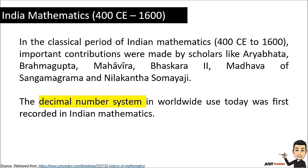Now let's move forward to 400 CE to the 18th century — Indian mathematics, 400 CE to the 16th century. In the classical period of Indian mathematics, important contributions were made by scholars like Aryabhata, Brahmagupta, Mahavira, Bhaskara the Second, Madhava of Sangamagrama, and Nilakantha Somayaji. The decimal number system in worldwide use today was first recorded in Indian mathematics.